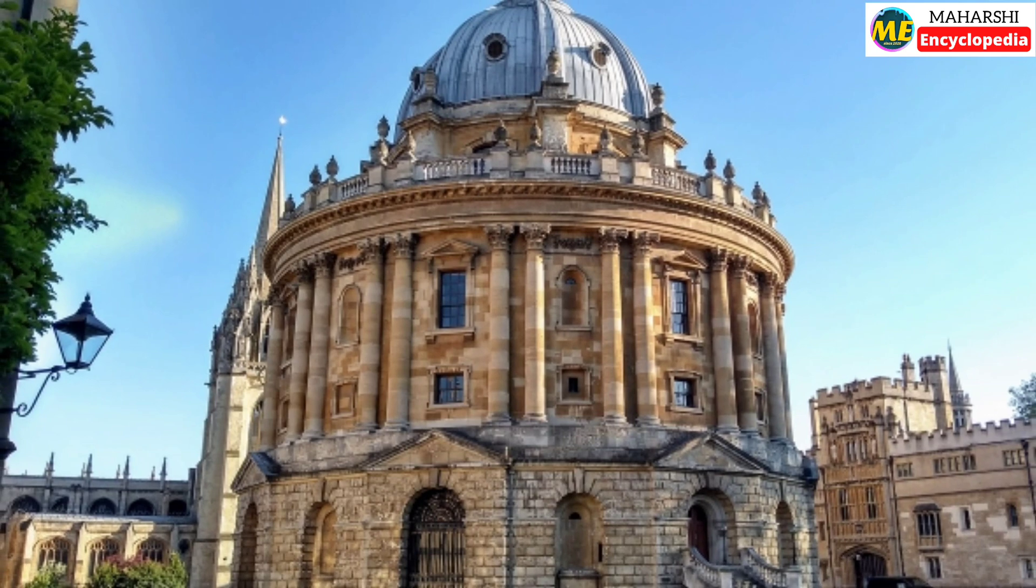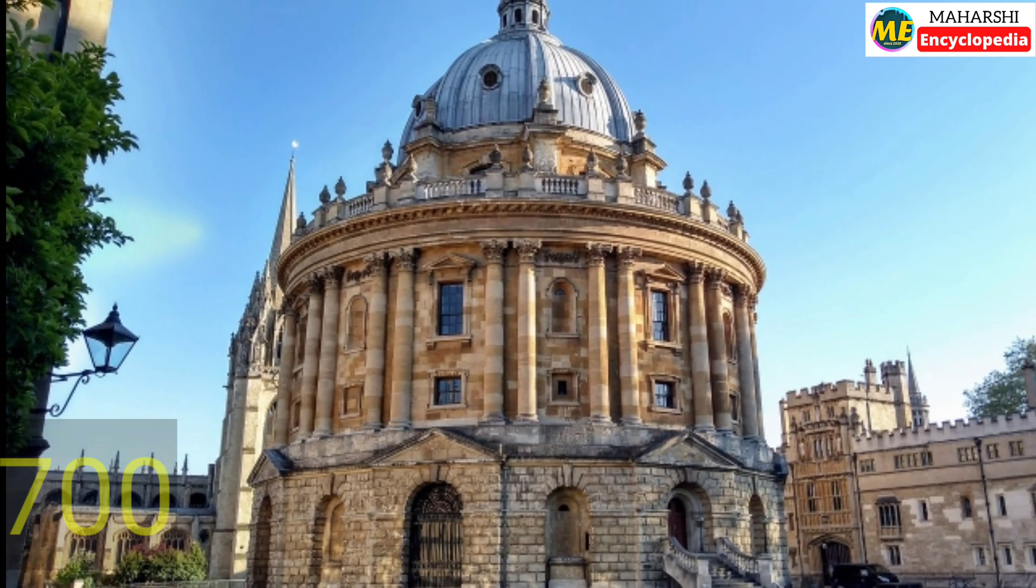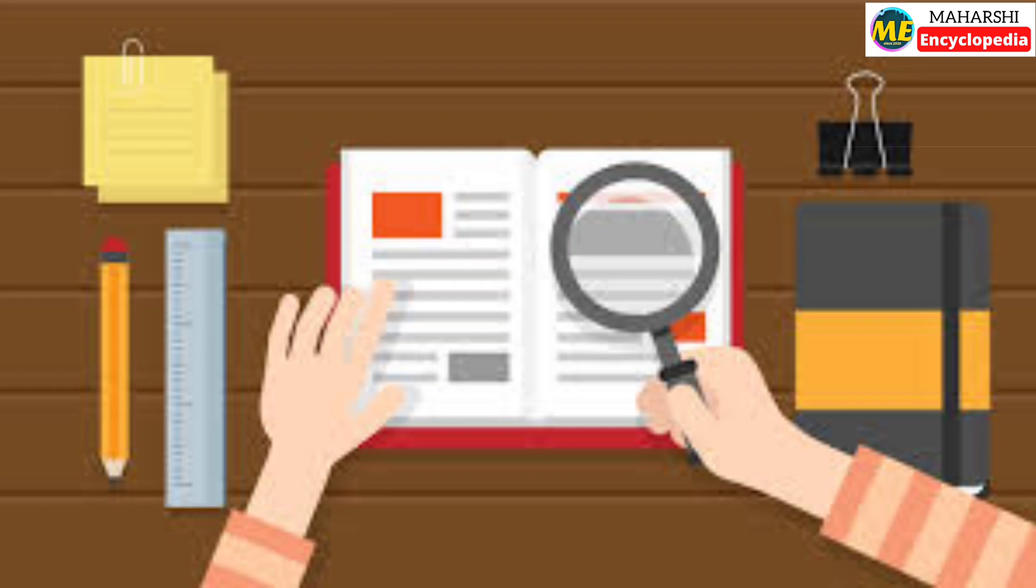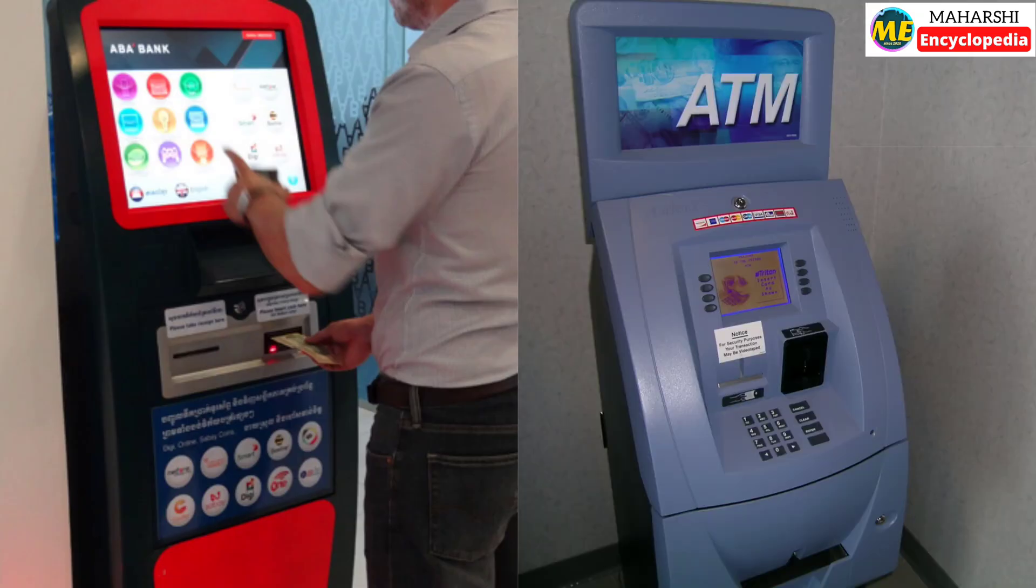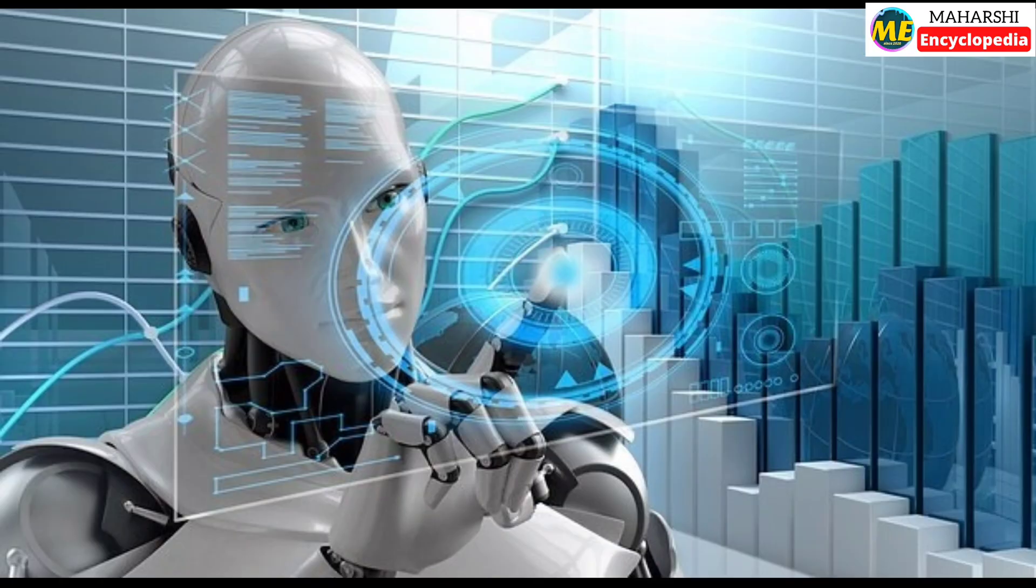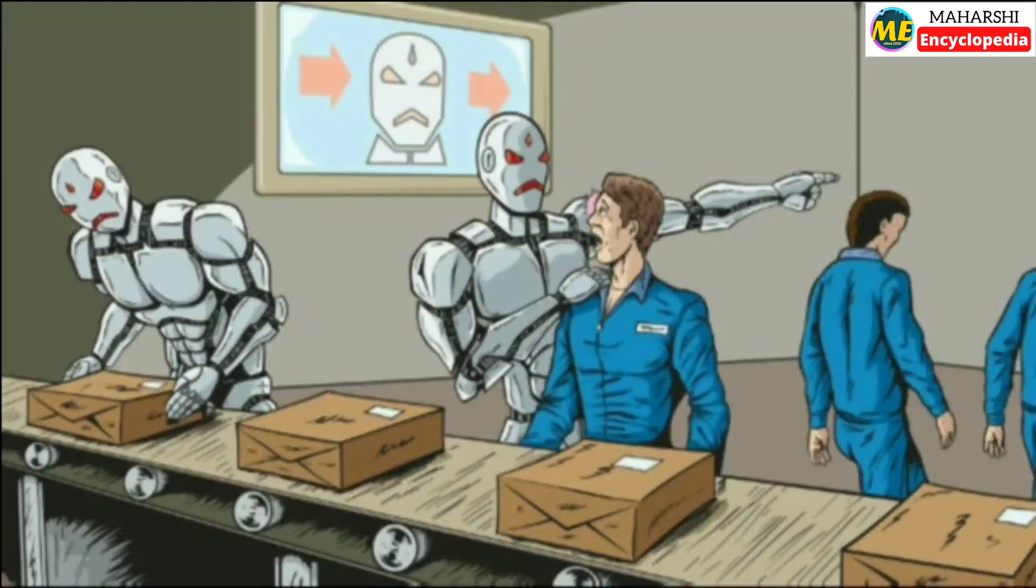A study by Oxford University found that 700 types of jobs could turn into automated machines. Research has shown that with the advent of cash deposit machines and ATMs, bank jobs; by self-driving vehicles, driver jobs; by robotics, manufacturing and many more jobs are at risk.